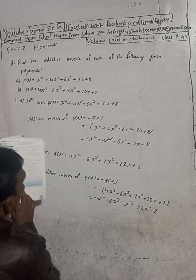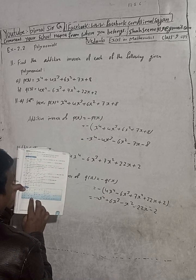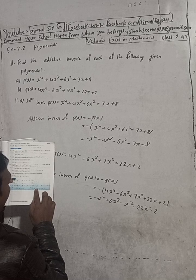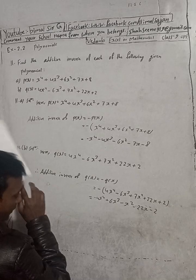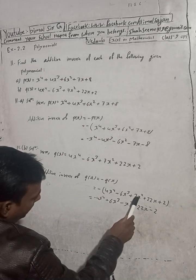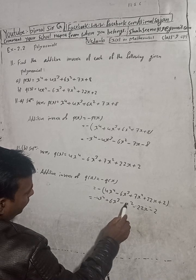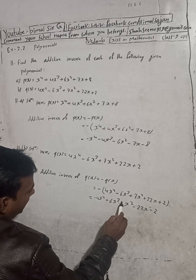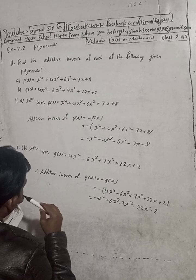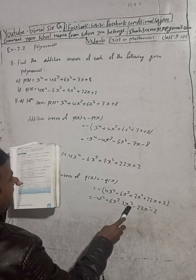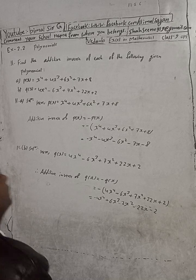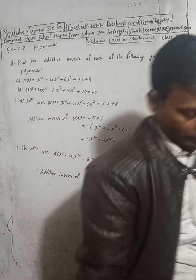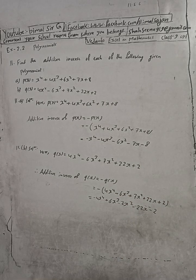Let me check the answers. 11a: minus x⁴ minus 4x³ minus 6x² minus 7x minus 8 — correct. And 11b: minus 4x⁴ plus 6x³ minus 7x² minus 22x minus 2.